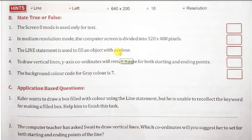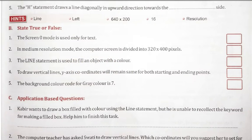Third is the line statement is used to fill an object with color. This is also false because line statement can only fill a box, not other objects. You can only fill a box using line statement with B or F letter.